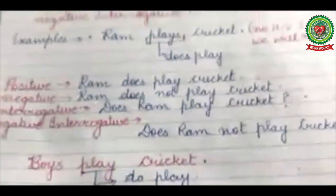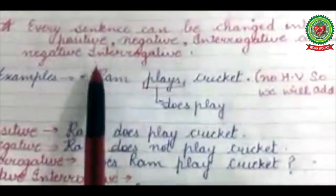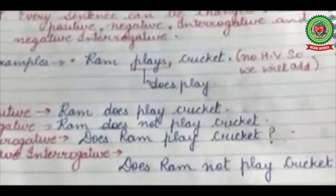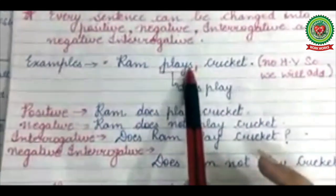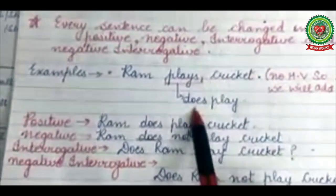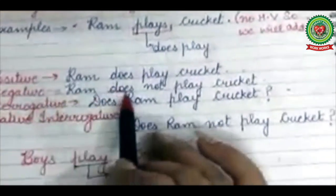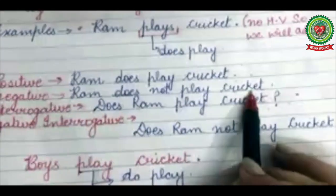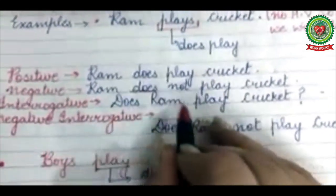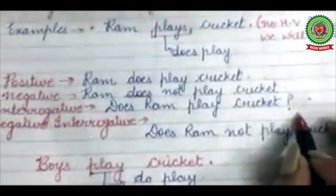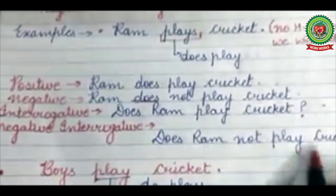Every sentence can be changed into positive, negative, interrogative, and negative interrogative. Example: Ram plays cricket. Since 'plays' has S, the helping verb will be 'does' and the verb returns to base form. Positive: Ram does play cricket. Negative: Ram does not play cricket. Interrogative: Does Ram play cricket? Negative interrogative: Does Ram not play cricket? Don't forget to put a question mark at the end of interrogative sentences.